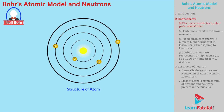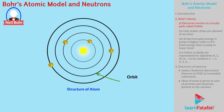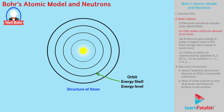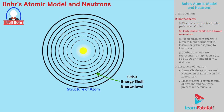According to Bohr's theory, electrons revolve in circular paths called orbits, or energy shells, or energy levels. There is a possibility of infinite orbits in an atom. However, in very few discrete, i.e. distinct orbits, electrons have stable energies.